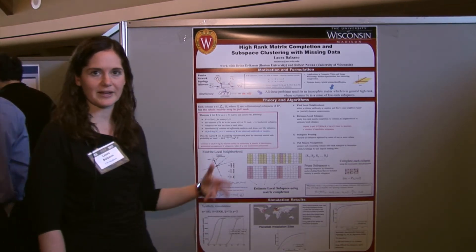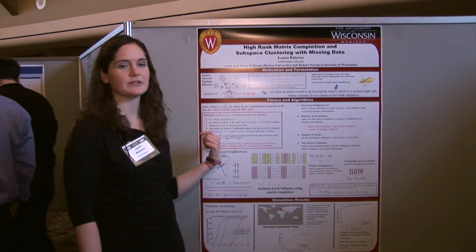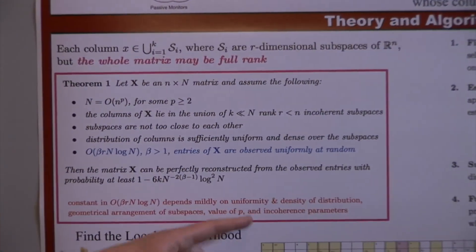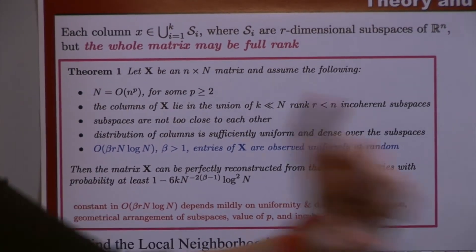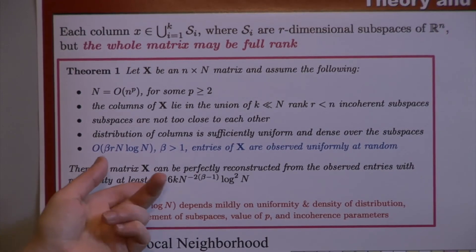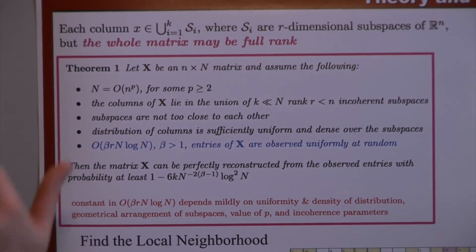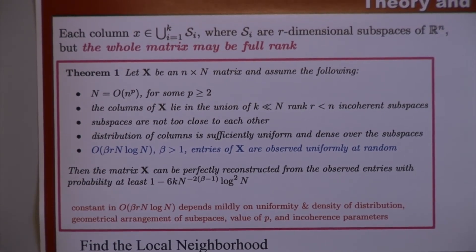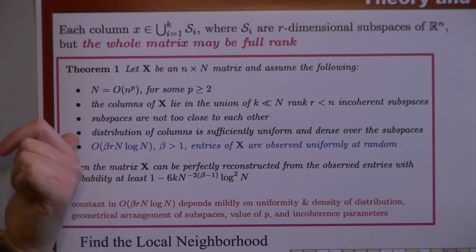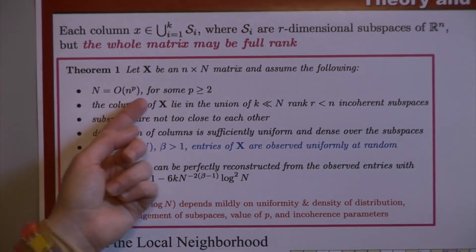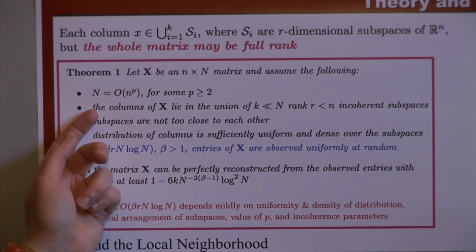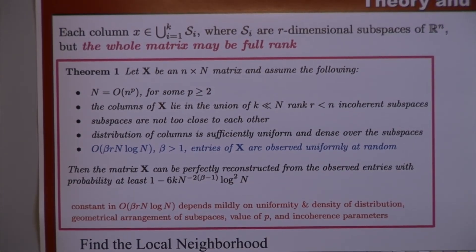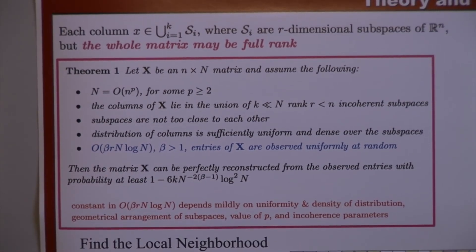The theorem that goes along with this methodology says that when the matrix is n by N — where little n is the smaller number of rows and big N is the very large number of columns — we only need r·N·log N entries in order to complete the matrix, which is the same order as needed for low rank matrix completion. One reason why that's possible is because we have many, many columns. The assumption is that the number of columns is polynomial in the number of rows, which is satisfied by the particular application we're interested in.